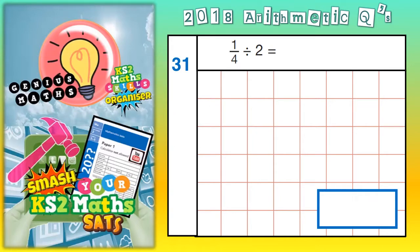Welcome, Arithmetic Ninjas, to question number 31. This one is dividing a quarter by a whole number, two. So a fraction divided by a whole number.